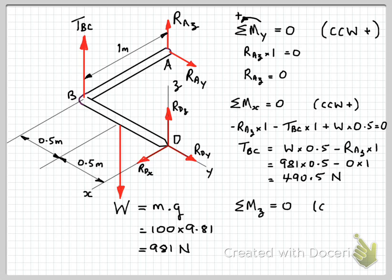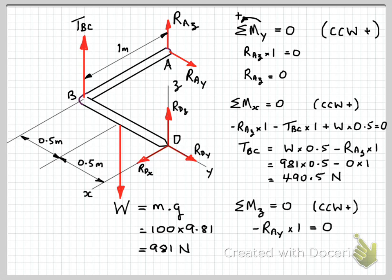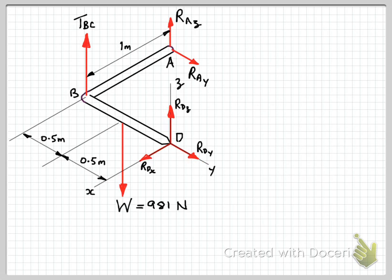Now taking moments about the z-axis: all forces — W, TBC, and RAZ — either pass through or are parallel to the z-axis. The only force causing a moment about the z-axis is RAY times one, which equals zero. So RAY equals zero.